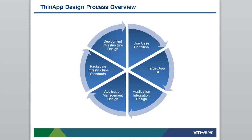Now let's look at the new design process overview. We start from use case definition, then work our way to target application list, which transitions into application integration design, application management design, packaging infrastructure standards, and deployment infrastructure design. We're going to break down each of those sections now.